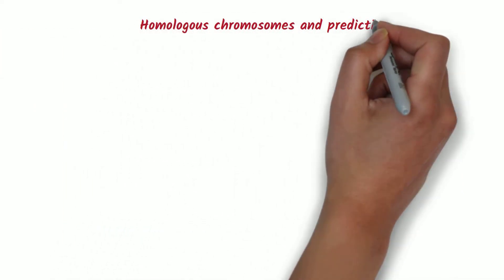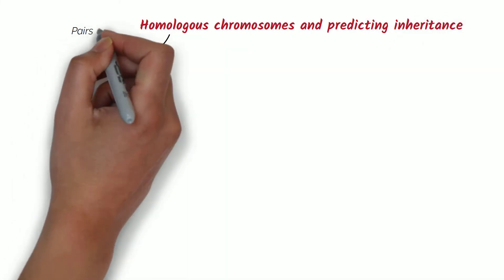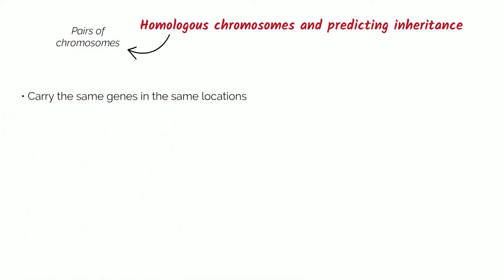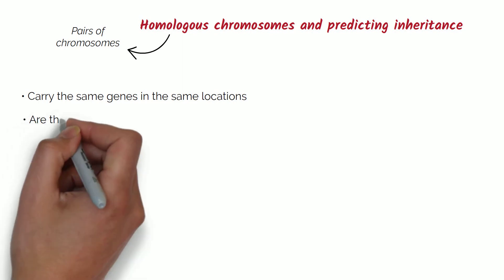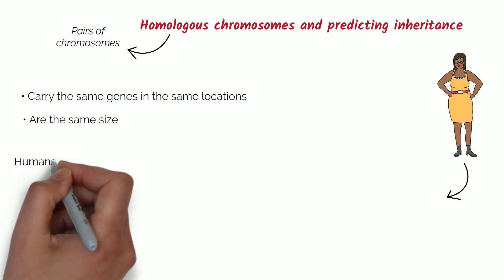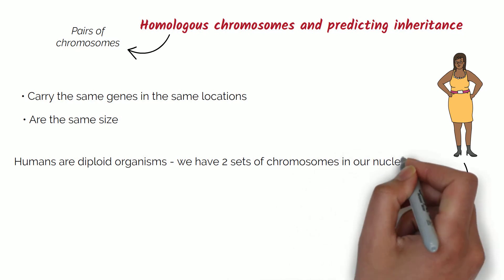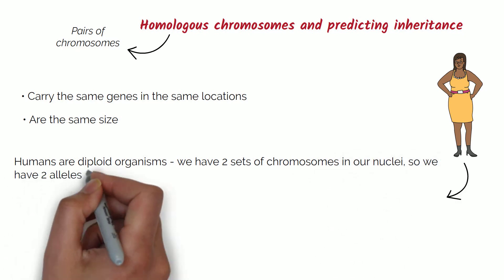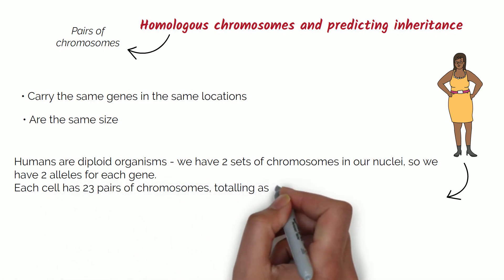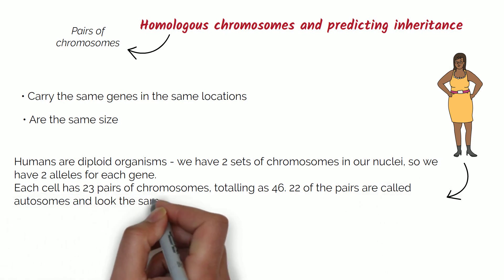Homologous chromosomes and predicting inheritance. Homologous chromosomes are pairs of chromosomes. They carry the same genes in the same locations and are the same size. Humans are diploid organisms — we have two sets of chromosomes in our nuclei, so we have two alleles for each gene. Each cell has 23 pairs of chromosomes, totalling 46. 22 of the pairs are called autosomes and look the same in males and females.